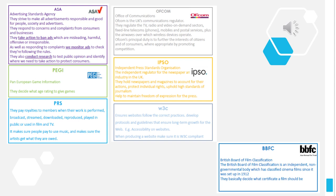W3C is a set of guidelines that every website is supposed to follow — if you don't follow the W3C rules, there's a good chance your website will be taken down from the internet. Finally, the BBFC decides what certificate a film receives. This can have a big impact on your product: to make the most money, you want as many people as possible to see it. If the film gets an 18 certificate, you'll miss out on everyone under 18. So you need to think about your target audience — if it's adults, you might include all the content you want; if not, you need to be mindful of the certificate.